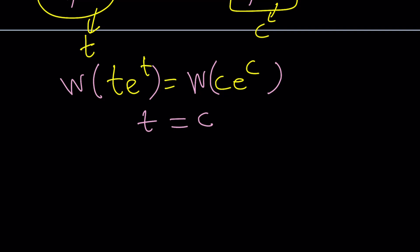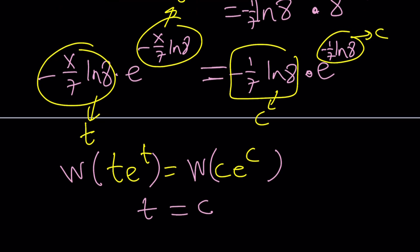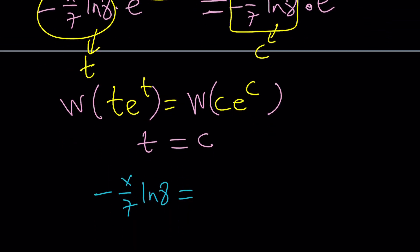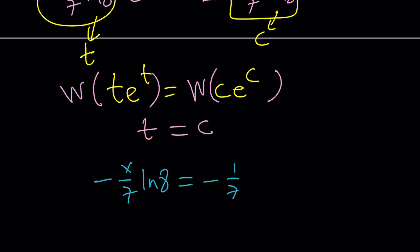Now, here's how we proceed. Back substitute. What is t? Negative x over 7 ln 8. And c is a constant. Remember, negative 1 over 7 ln 8. Awesome. ln 8 cancels out. 7 cancels out. Negative 1 cancels out. And we end up with x equals 1.